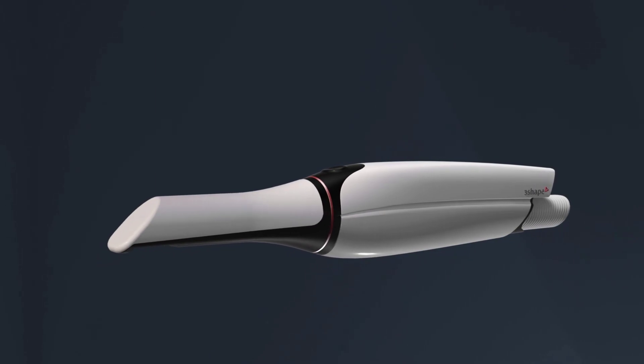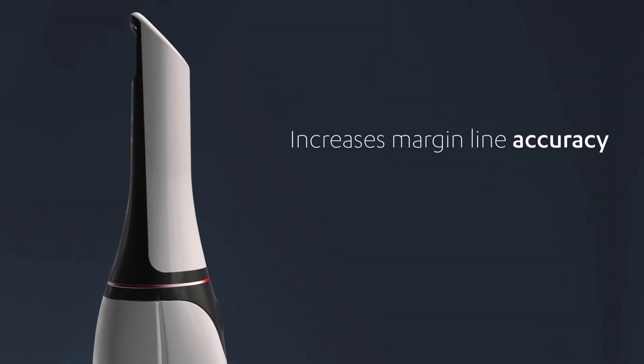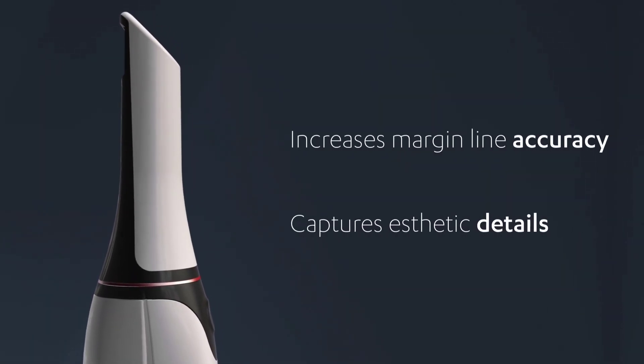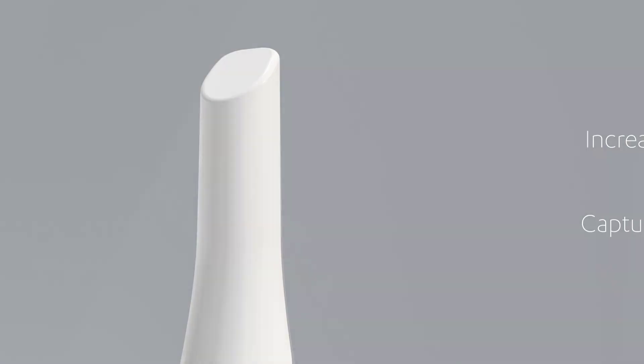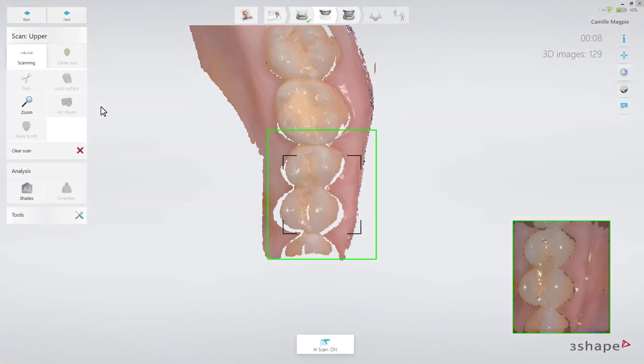The HD Photo function increases the margin line accuracy and captures aesthetic details, which is a huge advantage for the lab. Start by scanning the arch as usual.